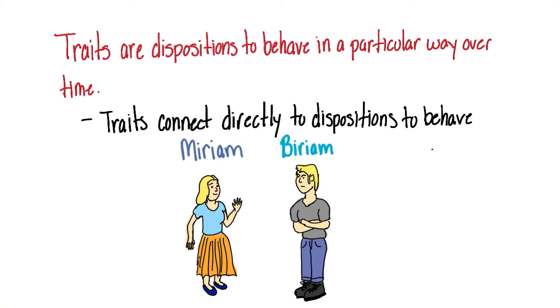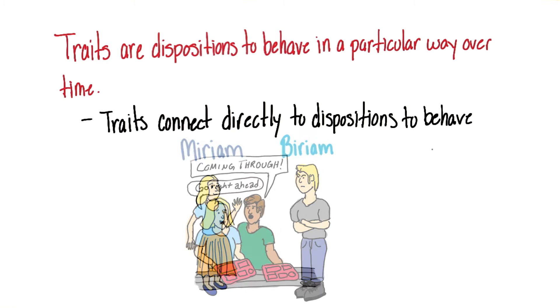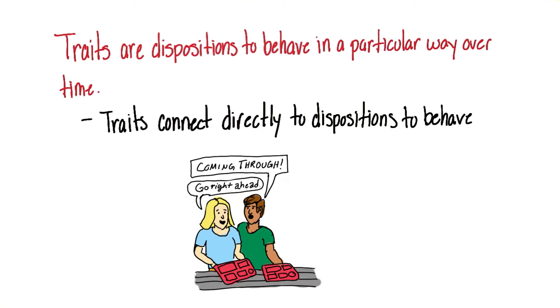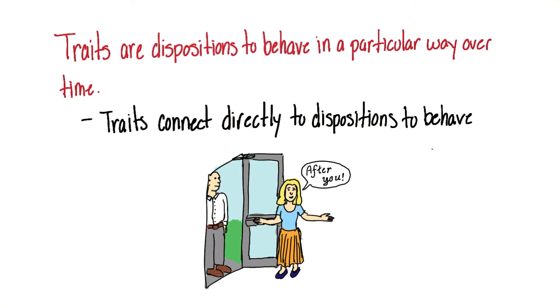Here we see Miriam and Bariam. Miriam is usually very friendly. Someone cut her in the lunch line and she was nice about it. She holds a door for people when they're walking in.